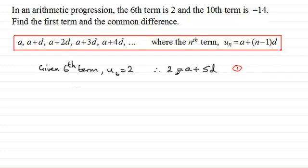So where do we get our other equation from? Well, it's clearly from this statement here that the 10th term is -14. So we'll just put down here that the 10th term, which is u_10, is equal to -14.